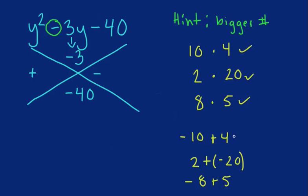So negative 10 plus 4 gives me a negative 6. It multiplies to 40, but it doesn't add to negative 3. 2 plus negative 20 gives me a negative 18. It multiplies to negative 40, but it doesn't add to negative 3. Negative 8 plus 5 gives me negative 3. That's perfect. Those are the numbers we want to use. We want to put a plus 5 here and a negative 8. Why? Because 8 is bigger than 5, so we put the negative. Negative 8 plus 5 gives me my negative 3.